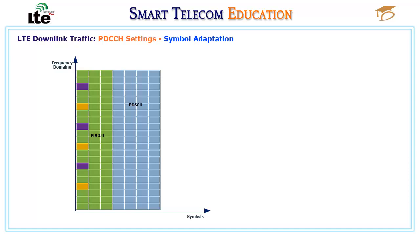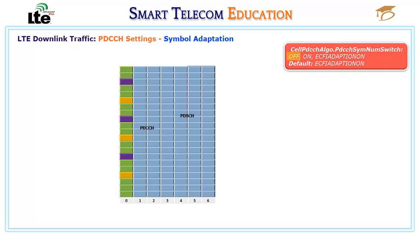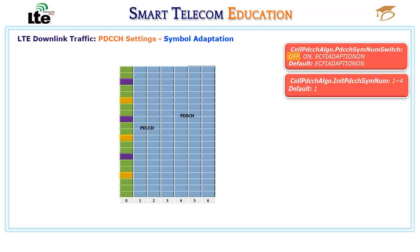PDCCH symbol adaptation enables the eNodeB to adjust the number of symbols occupied by a PDCCH based on the number of required CCEs. When a PDCCH requires fewer CCEs, the eNodeB decreases the number of symbols and allocates idle time-frequency resources to PDSCH. When a PDCCH requires more CCEs, the eNodeB increases the number of symbols until the number reaches the maximum permissible value. The PDCCH symbol number adjust switch parameter specifies whether to enable PDCCH symbol adaptation; when set to OFF, adaptation is disabled and the number of symbols follows the initial PDCCH symbol number parameter.